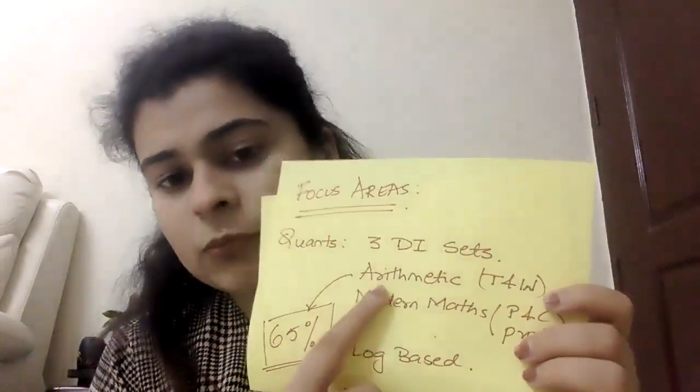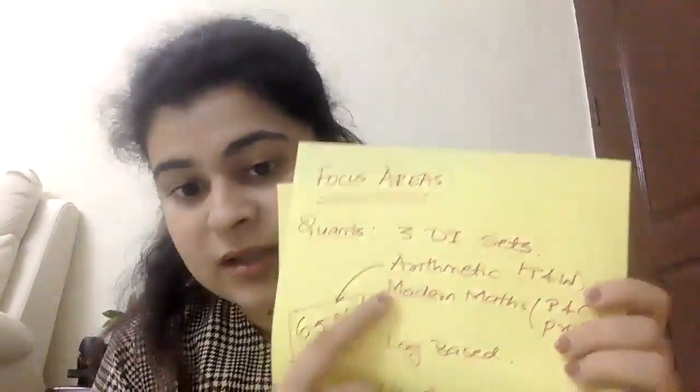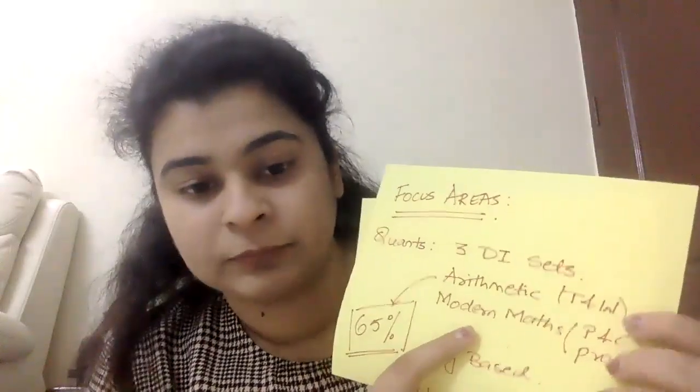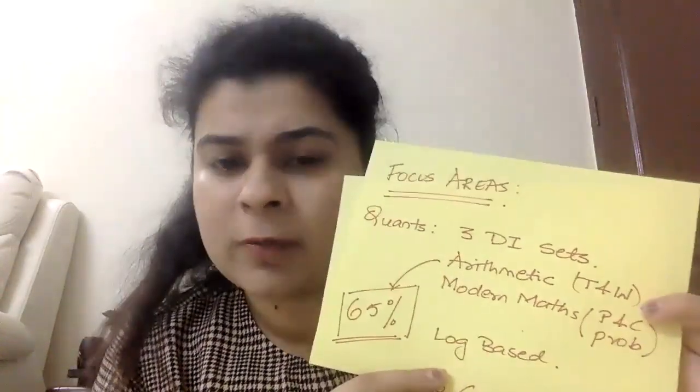In the quant section, the most important area is arithmetic — 65% weightage goes to arithmetic. Then we have modern maths, then log-based questions. Log-based questions are not very difficult or time-consuming; they are actually direct formula-based application questions. For number theory, remainder theorem — one question or at max two questions come in any given situation.